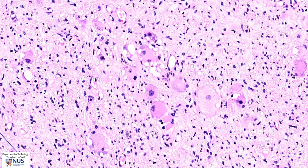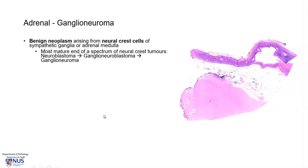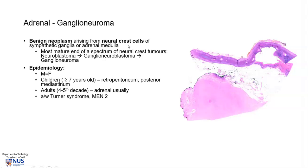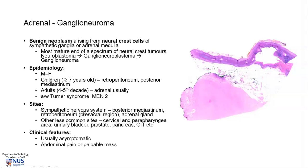Ganglioneuroma is a neoplasm that arises from neural crest cells. It is benign, and occurs with equal frequency in males and females. It can occur in children as well as in adults; in adults, they tend to occur in or around the adrenal gland. Because this arises from sympathetic nervous system tissue, it tends to occur in the posterior mediastinum, retroperitoneum, adrenal gland, and it can even occur in visceral locations, including the bladder, the prostate, pancreas, and gastrointestinal tract.